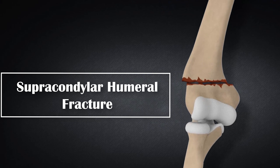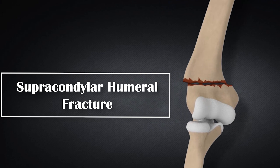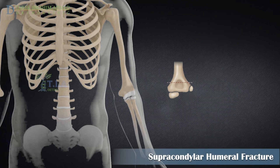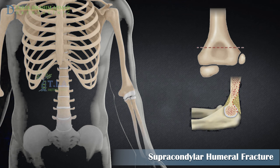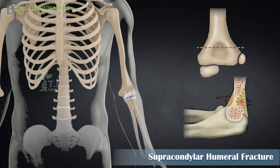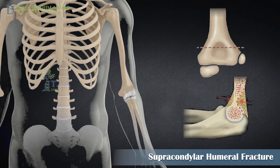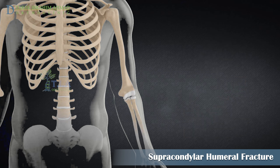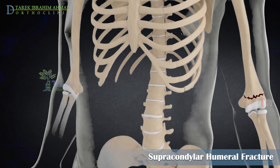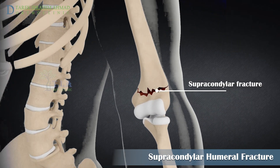Supracondylar humerus fractures in children: the supracondylar region encompasses an area of thin, weak bone located in the distal humerus. This region is especially predisposed to fracture because its configuration — two columns connected by thin bone — represents a zone of weakness. Supracondylar fractures of the humerus are the most frequent fractures affecting the pediatric elbow.